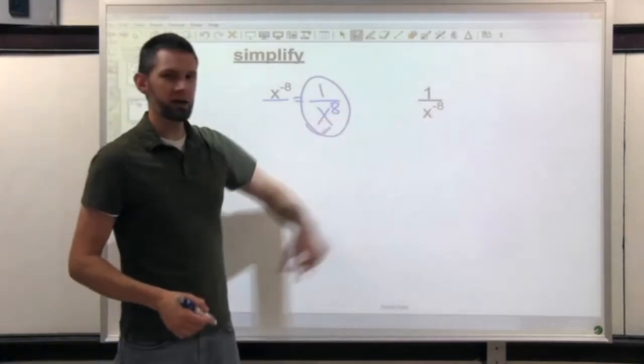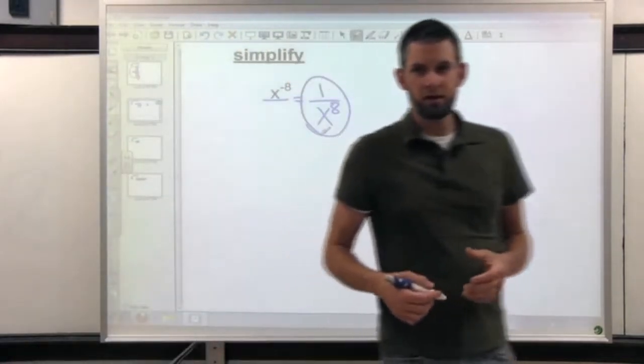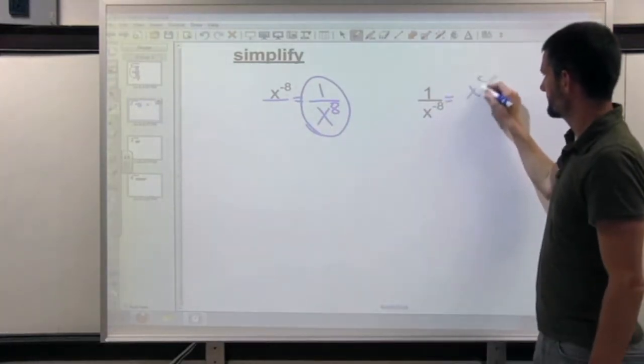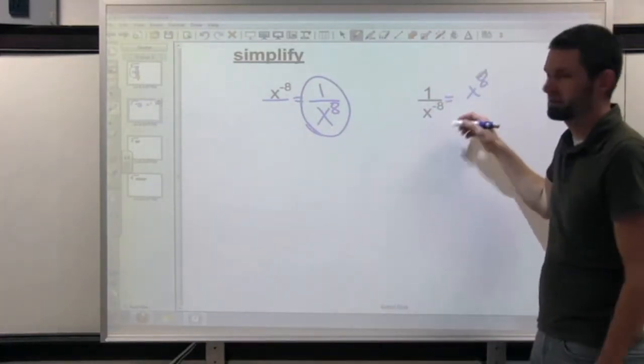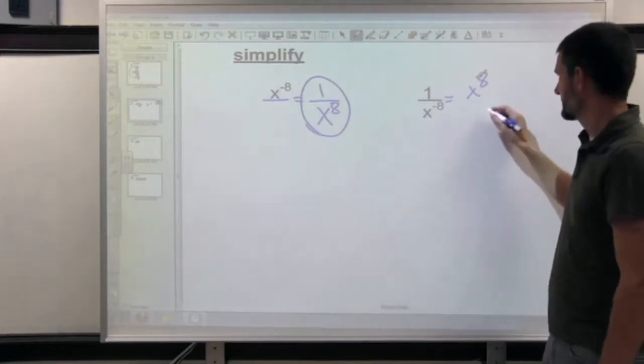Or if I have a negative 8 on the bottom, make the reciprocal, x to the 8 on the top. And I don't need it over 1, that's kind of unnecessary.